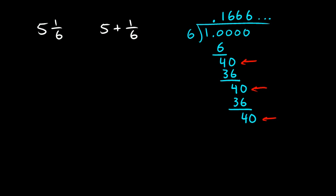So, 5 plus 1 sixth is 5 plus this number. And I'll write it like this. 5.16. And you could write your 6's and put the dots. I like this notation better. 5.16 repeating. Put the bar over the 6, indicating that the 6 repeats.